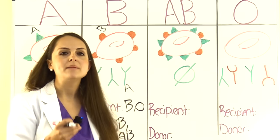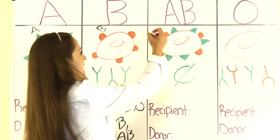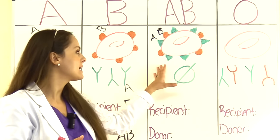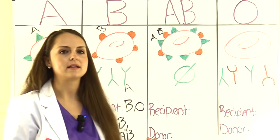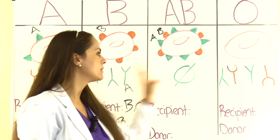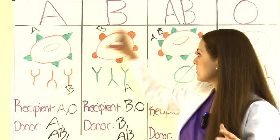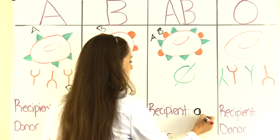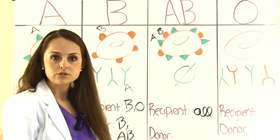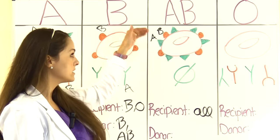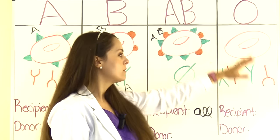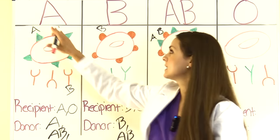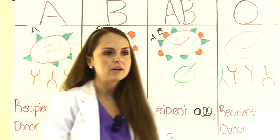Type AB has both A and B antigens on the red blood cell surface but no antibodies in the plasma. This makes AB the universal recipient — they can receive from everyone including themselves, because there are no antibodies to attack incoming red blood cells. However, as a donor AB can only donate to other ABs, because their A and B surface antigens would react with the A antibodies in type B, the B antibodies in type A, and both antibodies in type O.